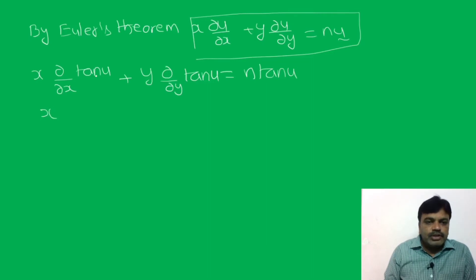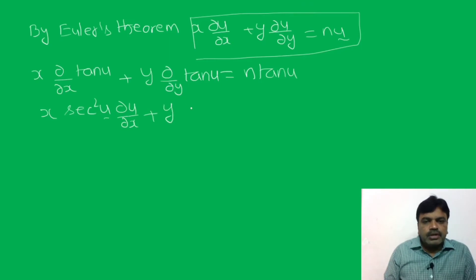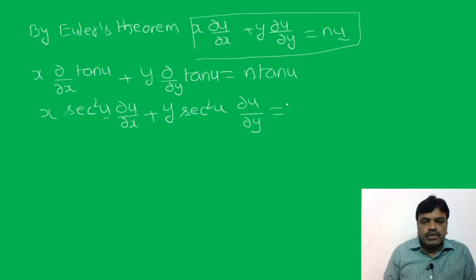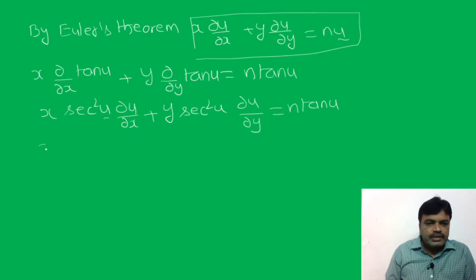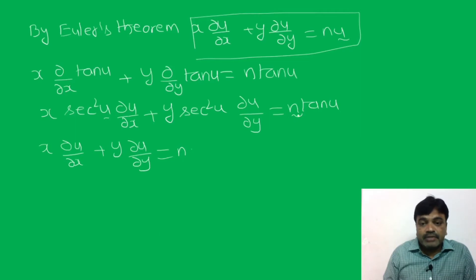The derivative of tan u is sec²u, so we get x·sec²u·∂u/∂x + y·sec²u·∂u/∂y = n·tan u. Dividing both sides by sec²u, we get x·∂u/∂x + y·∂u/∂y = n·tan u/sec²u. Here n = 2, so it equals 2·tan u·cos²u.